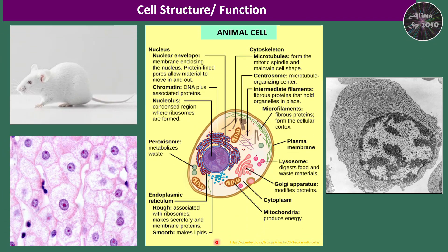Let's take a look at animal cell structure and function. This is how the animal cell looks under the optical microscope and under the transmission electron microscope. The most important structure we can observe is the nucleus — a double membrane-bounded organelle containing chromatin, nucleolus, and nucleoplasm. It acts as the control center of the cell, storing genetic information (DNA) and coordinating activities such as growth, metabolism, protein synthesis, and cell division.